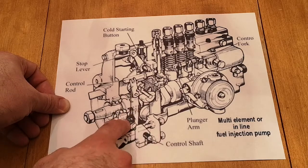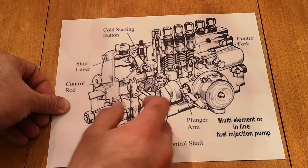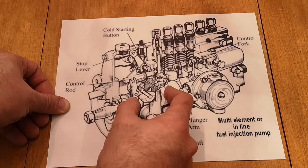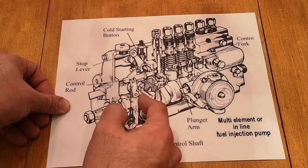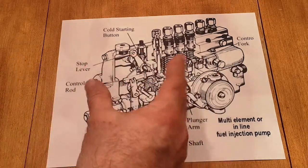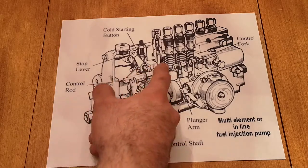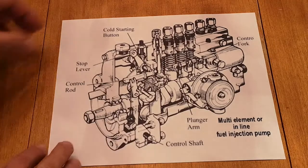The governor contains weights, which spin around, and then there's also a spring over here that constantly pushes against the weights. The two of them combined will control the control rod, which controls the amount of fuel going in.